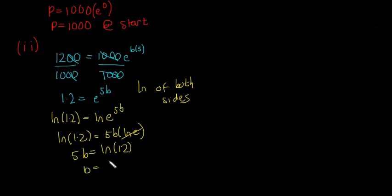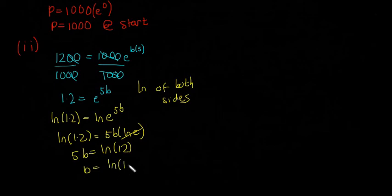So B, our final answer, is going to be LN of 1.2 divided by 5. So stick that into your calculator and you'll find your answer. And it depends how many decimal points they want of how many decimal points you're going to give. In this case, I'm just going to give it to 0.0364, just to 4 decimal places or 3 significant figures. 0.0364 is our answer for B.